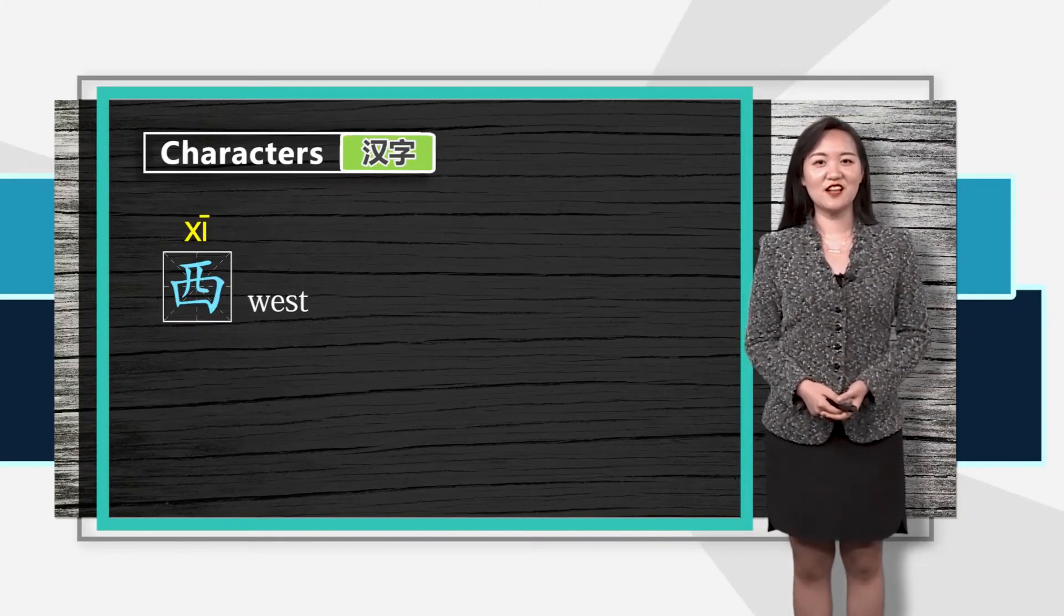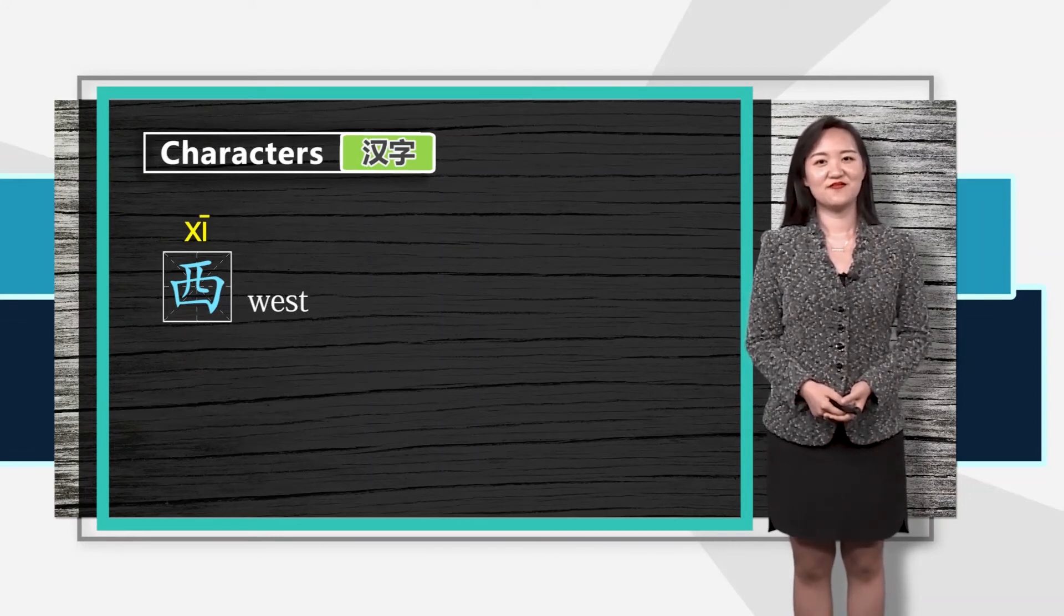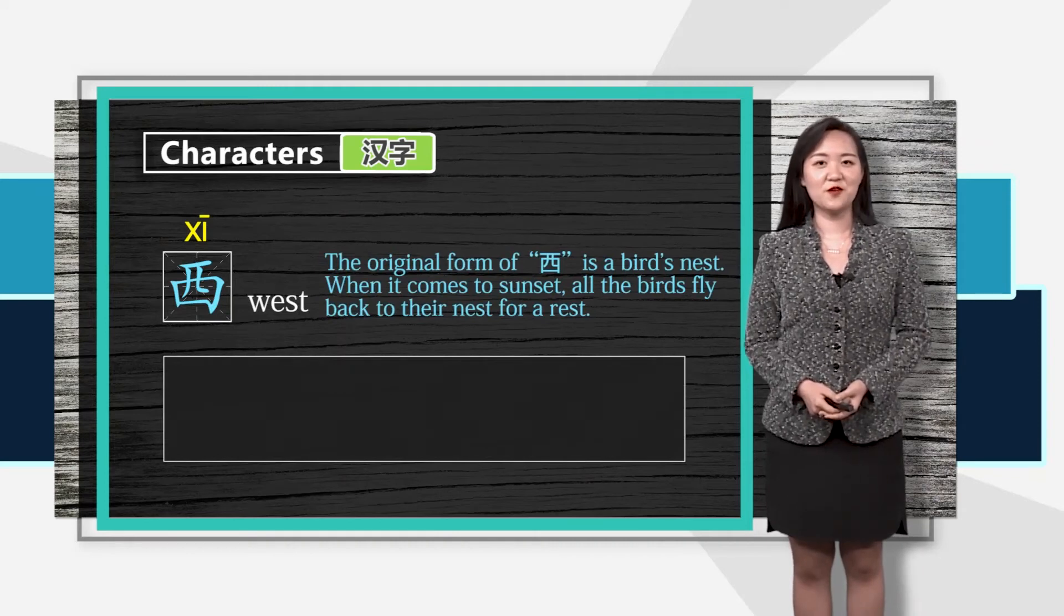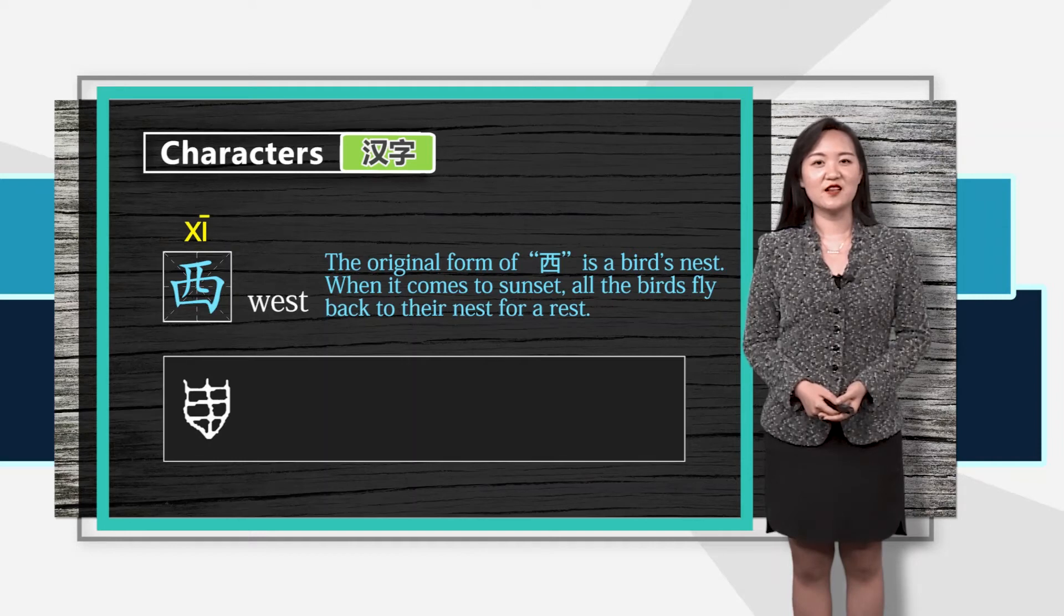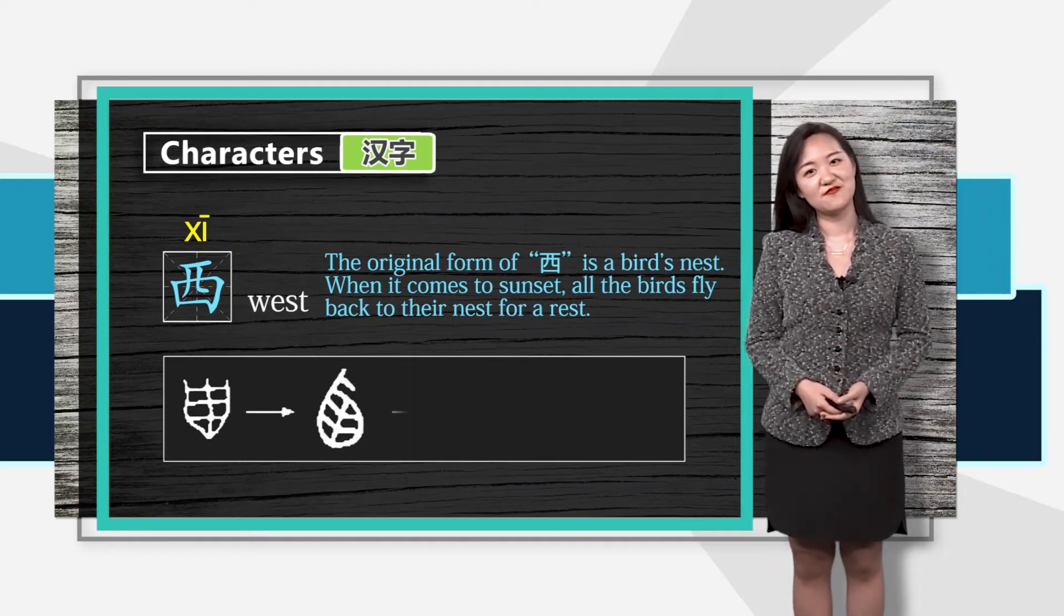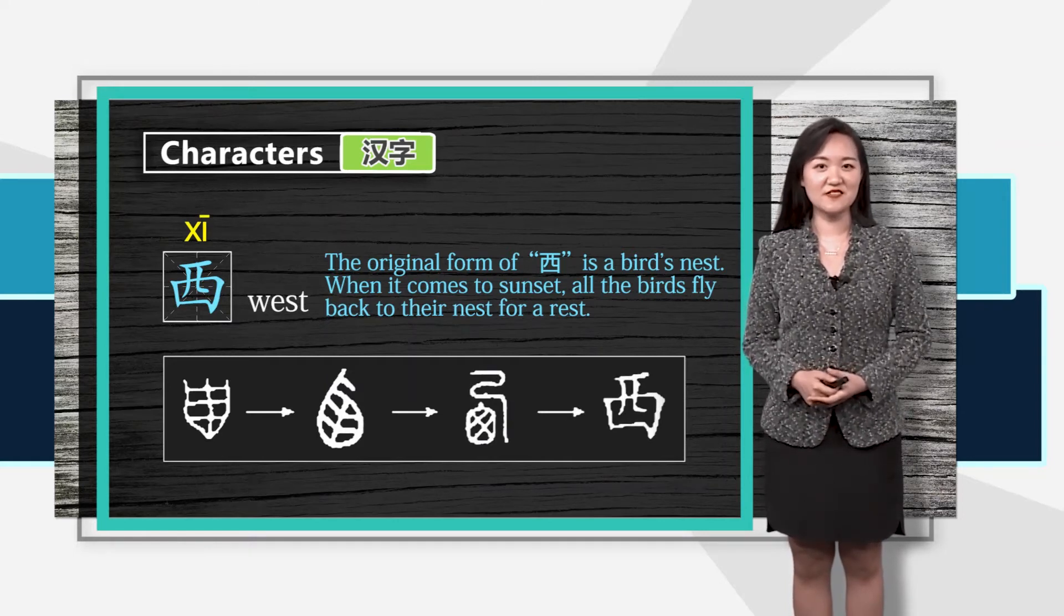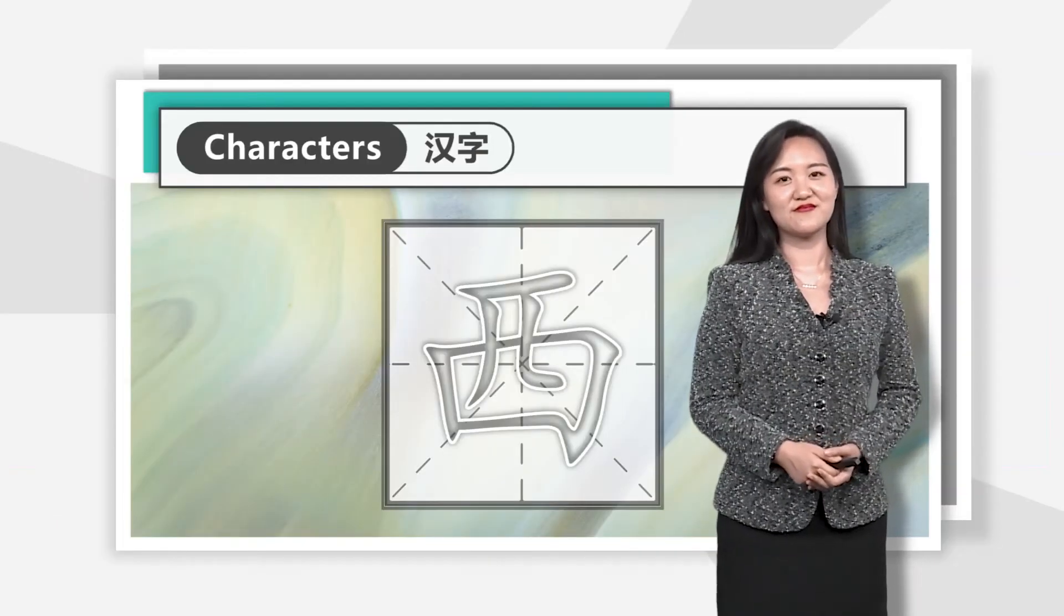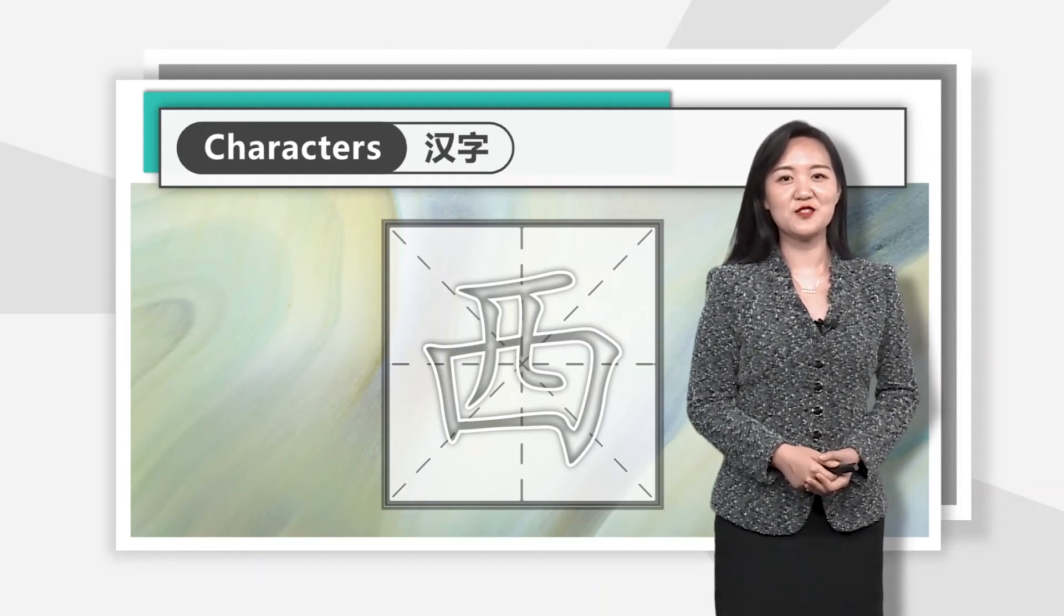The opposite direction of 东 is 西, west. The original form of 西 is a bird's nest. When it comes to sunset, all the birds fly back to their nest for a rest. Therefore, this character indicates the direction of sunset, west. Let's write it down together and pay attention to the stroke order.